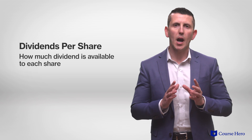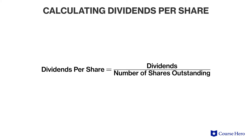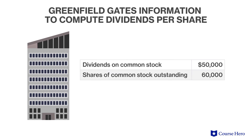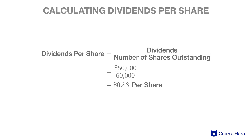Dividends per share is similar to earnings per share. In earnings per share, the investor measures how much net income was available to each share of common stock. In dividends per share, the investor looks at how much dividends are available to each share. To calculate dividends per share, divide the total dividends paid in a year by the number of shares outstanding. Suppose that Greenfield Gates Company paid fifty thousand dollars in dividends to common stockholders and there were sixty thousand shares of common stock outstanding. The dividends per share would be 83 cents, meaning investors receive 83 cents in dividends for each share of common stock they own.